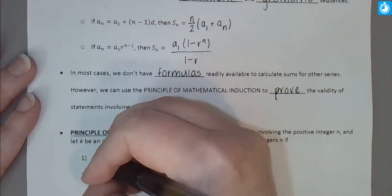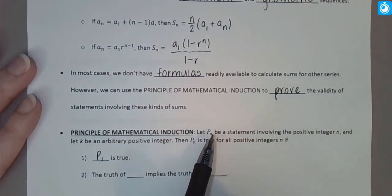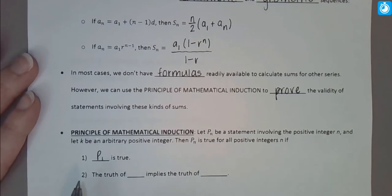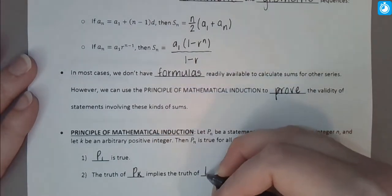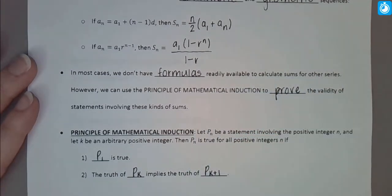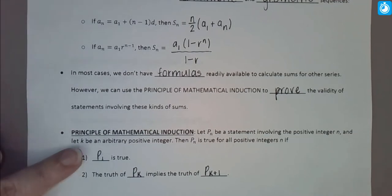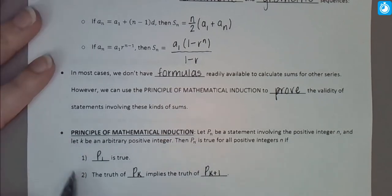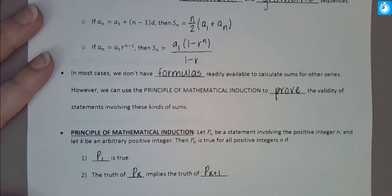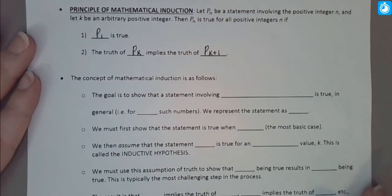P sub n is true for all positive integers n if the following two conditions are met. First, P sub 1 must be true — the case where n equals 1, the most basic case, must hold. Second, the truth of the generic statement P sub k must imply the truth of the following statement P sub k plus 1. If we can show these two conditions hold, then by the principle of mathematical induction, the statement is true in general for any positive integer n.